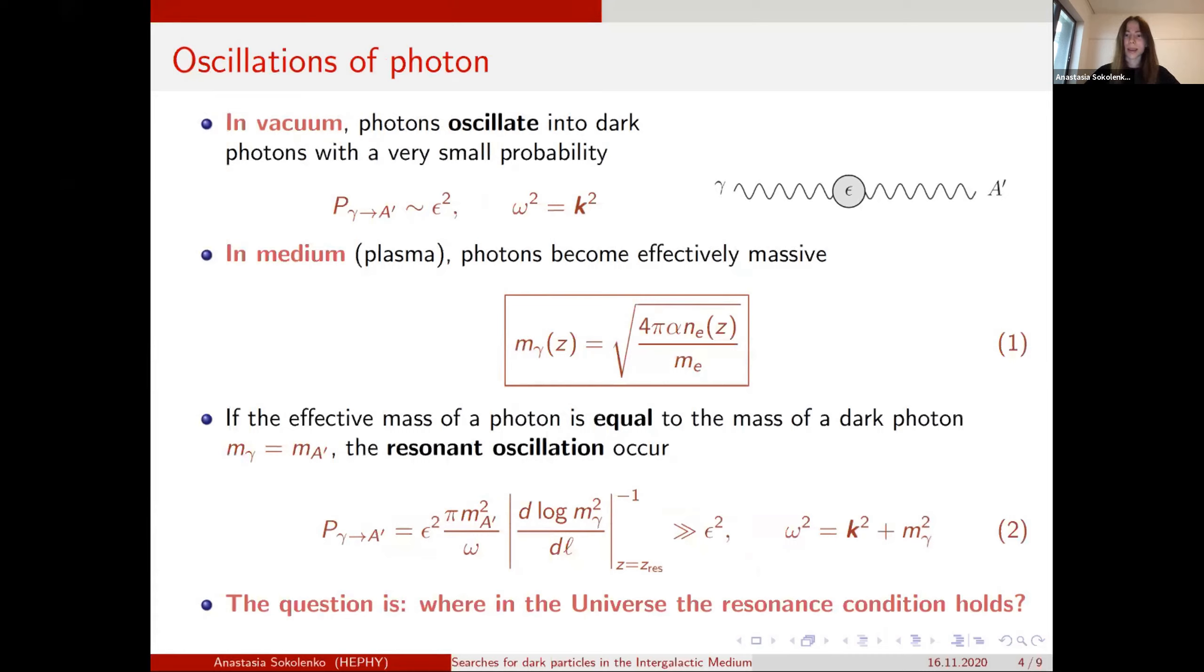But when the photon propagates in a medium, in a plasma, then another effect happens. And effectively, photons became massive because they interact with charged particles. And their mass is given at first order by this expression. So the mass of the photon is proportional to the square root of electron number density. And because of that, this oscillation could enter into a resonant regime where the probability of this conversion is much larger than the coupling constant, and is given by this expression.